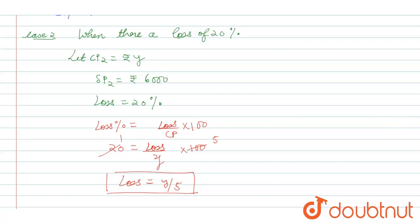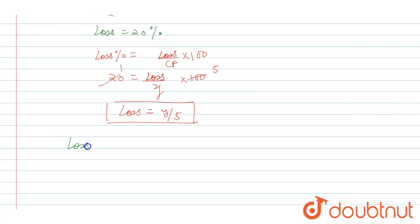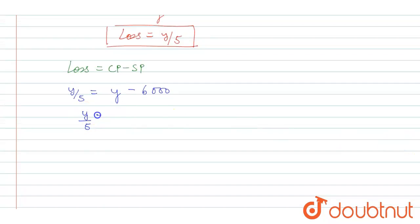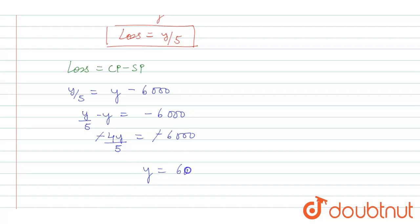Loss equals CP minus SP, so y by 5 equals y minus six thousand. This gives minus four y upon 5 equals minus six thousand, so y equals six thousand into five by four, which gives y equals seven thousand five hundred. Therefore CP2 is rupees seven thousand five hundred.